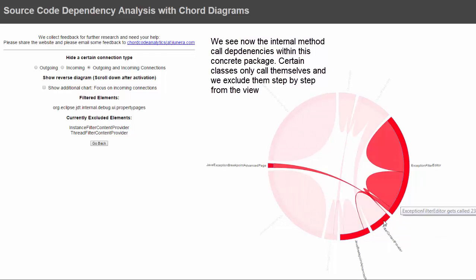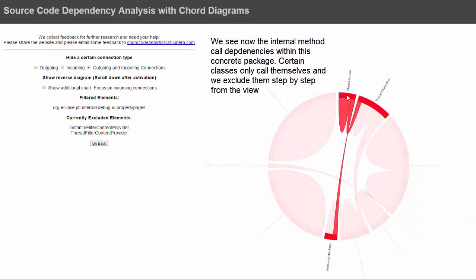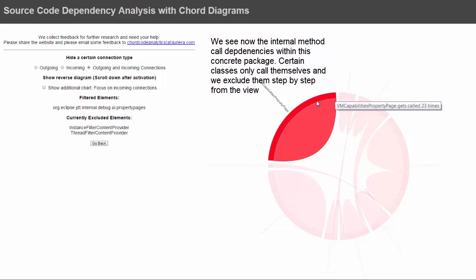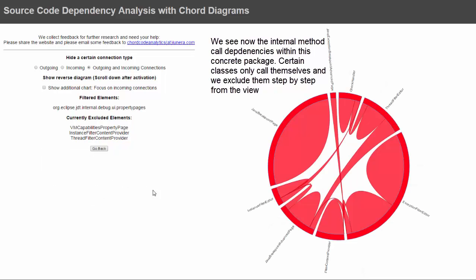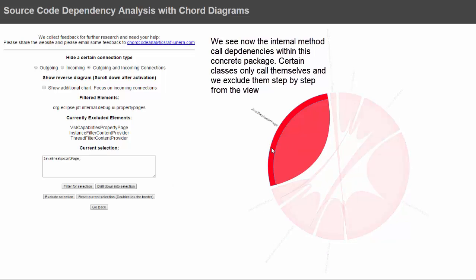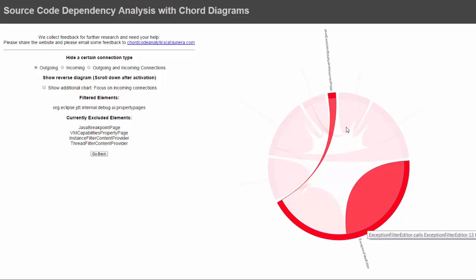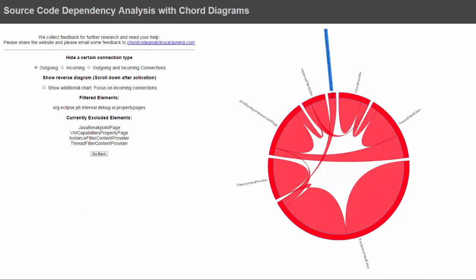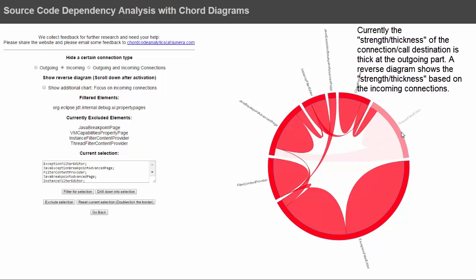I can see how often this class is called and so on. I have this class only called by itself, so I exclude it, and continue selecting and clicking through, excluding elements. You see me in timelapse selecting and excluding elements quickly — you can explore this better yourself and tell me what you find out. There is also a functionality worth mentioning in this context: it's called the reverse diagram.